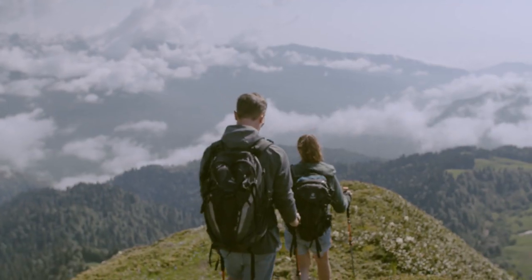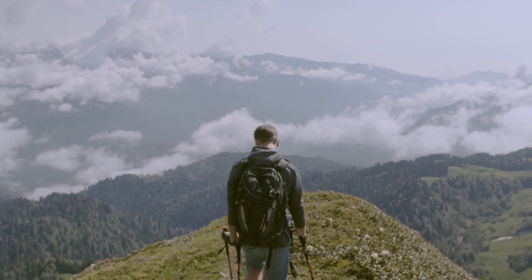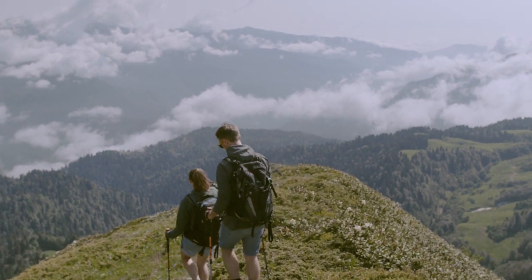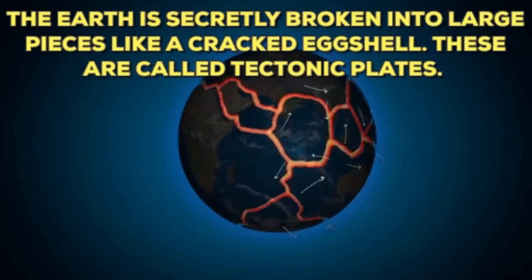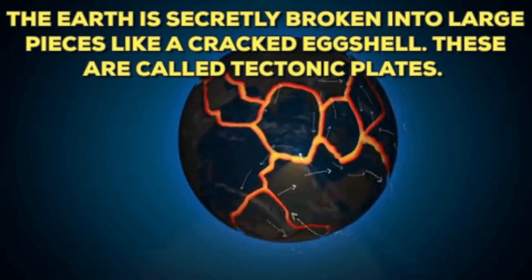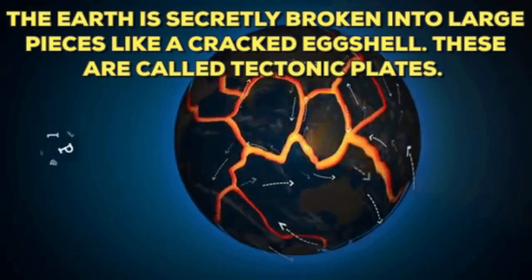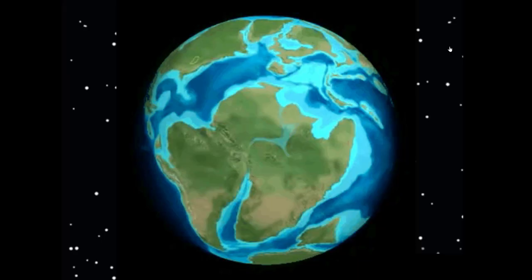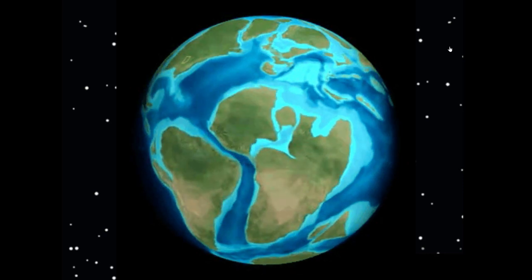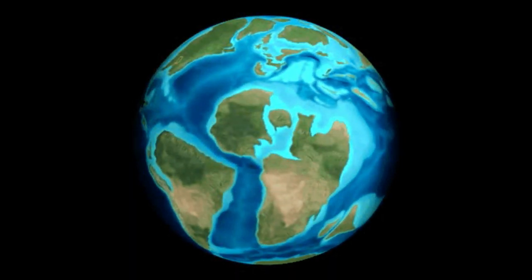In order to answer these important questions, it starts with one of the most important scientific discoveries of all time: the theory of plate tectonics. The theory of plate tectonics states that the Earth's solid outer crust, the lithosphere, is separated into many plates that move over the asthenosphere, the molten upper portion of the mantle.